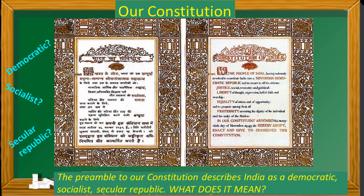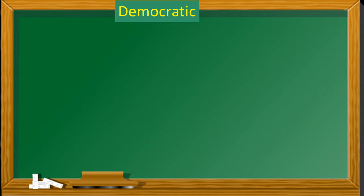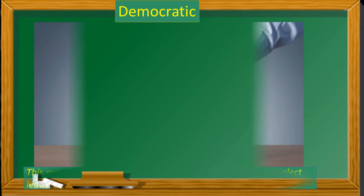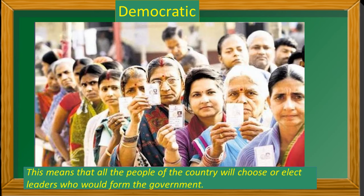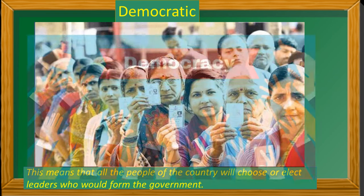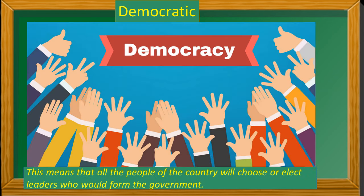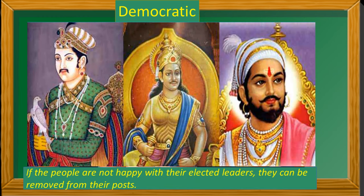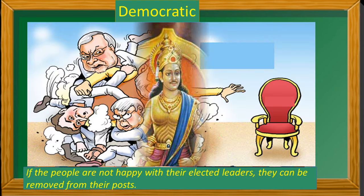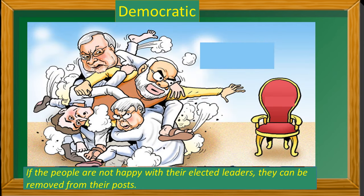What does it mean? Let us understand. Democratic — this means that all the people of the country will choose or elect leaders who would form the government. This kind of government is known as democracy. Thus, our country is no longer ruled by kings. If the people are not happy with their elected leaders, they can be removed from their posts.